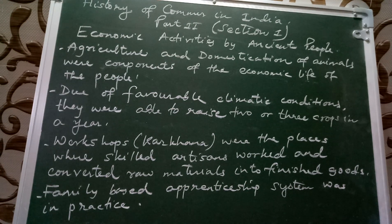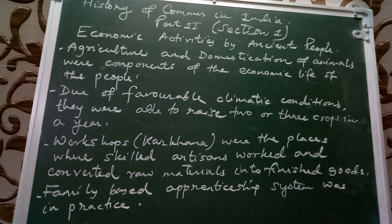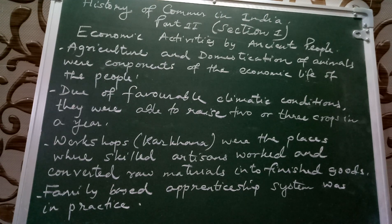After fulfilling their needs, they used to have surplus savings so that those savings could be used in order to finance agriculture and to purchase animals. Workshops or car khanas were the places where skilled artisans worked and converted raw materials into finished goods, and these finished goods were high in demand.